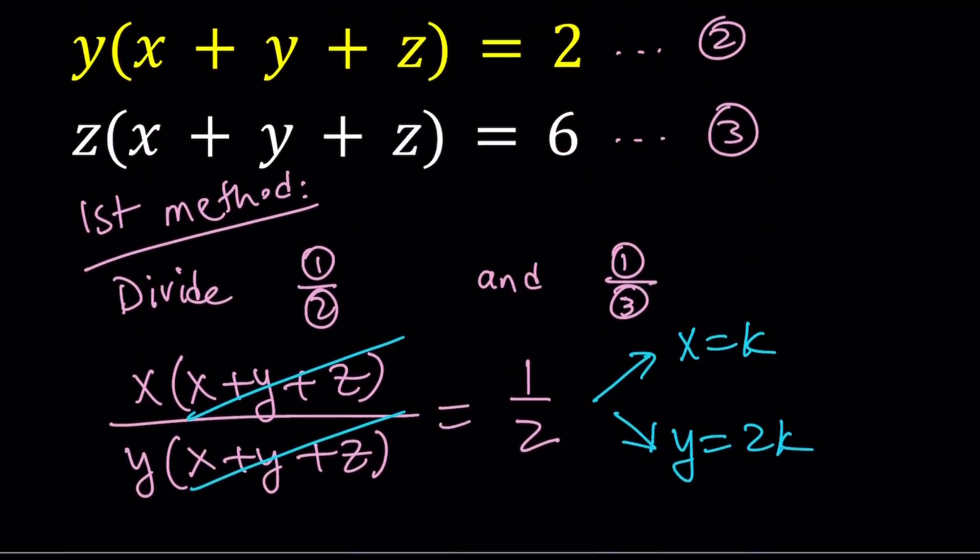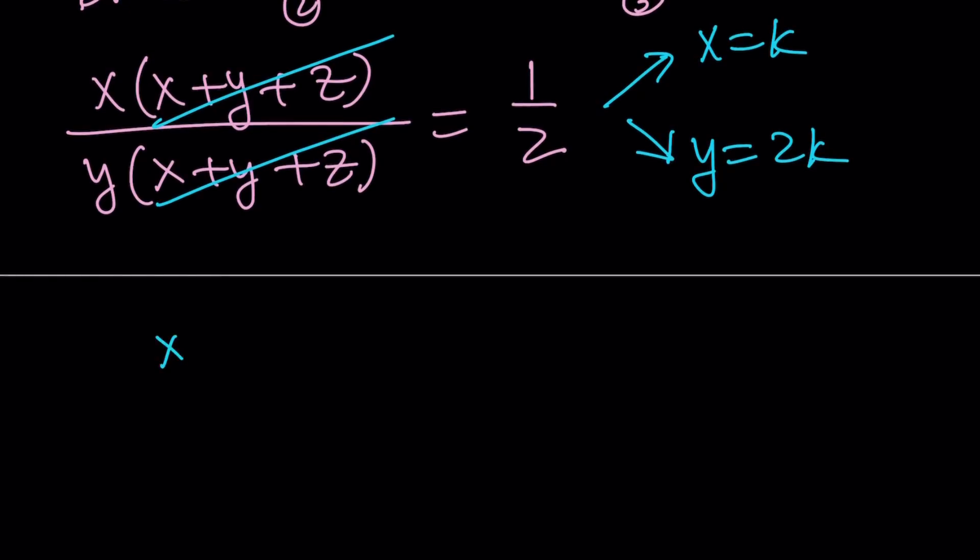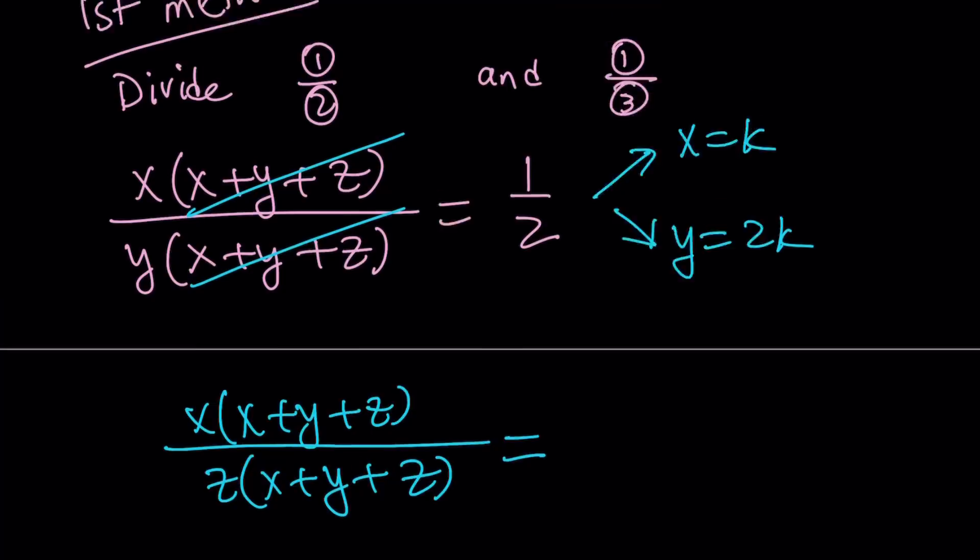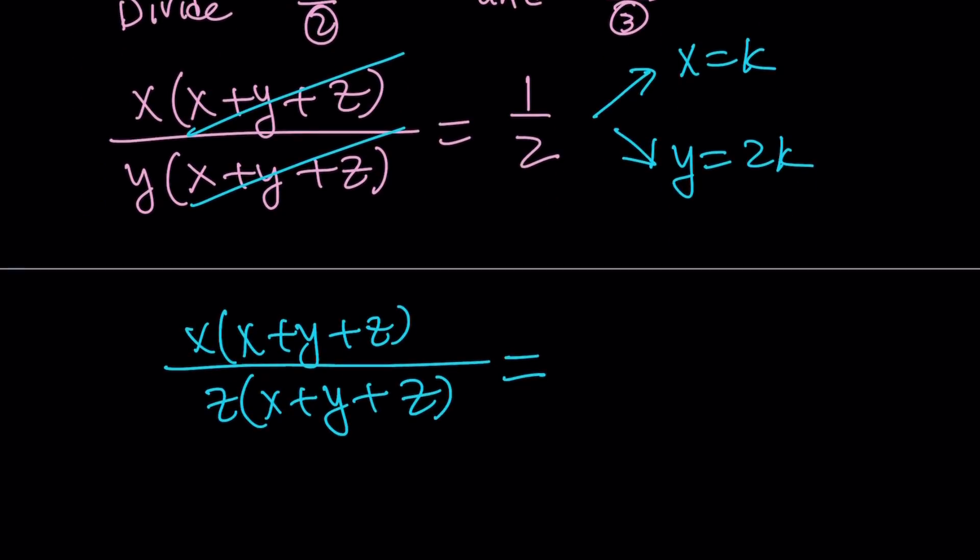Let's go ahead and do first and third now. Now, we have x times x plus y plus z and that is divided by z times x plus y plus z and that should equal 1 over 6. Now, the same thing happens here when x plus y plus z cancels out. We get the ratio of x to z as 1 over 6. So from here, we can safely say that x equals k and z equals 6k.